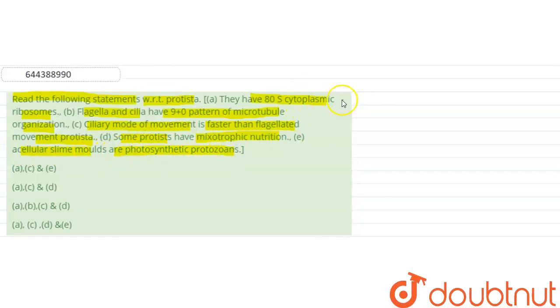Statement 1 is correct, as along with ATS cytoplasmic ribosomes, they have 70S ribosomes in their body. The second statement is they have 9 plus 0 pattern of microtubules, which is incorrect because they have 9 plus 2 arrangement of microtubules. So that's why this statement is incorrect.